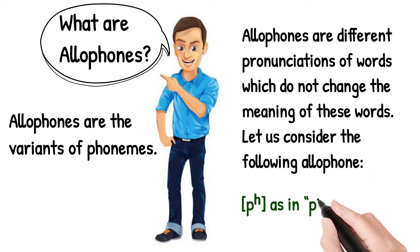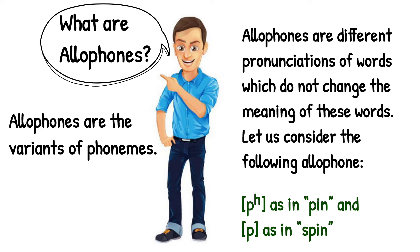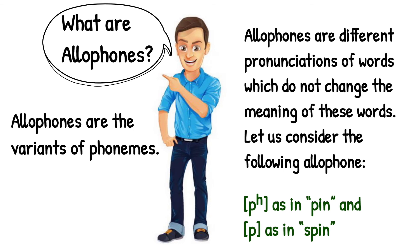Consider the following allophones: /pʰ/ as in 'pin' and /p/ as in 'spin'. These are variants of the same phoneme /p/. One phoneme has different allophones. The /p/ in 'pin' is aspirated, while the /p/ in 'spin' is unaspirated. Despite this difference in pronunciation, the meaning of neither word is affected. Different phonemes can have different allophones, and because of these allophones, the meaning of the words remains the same.